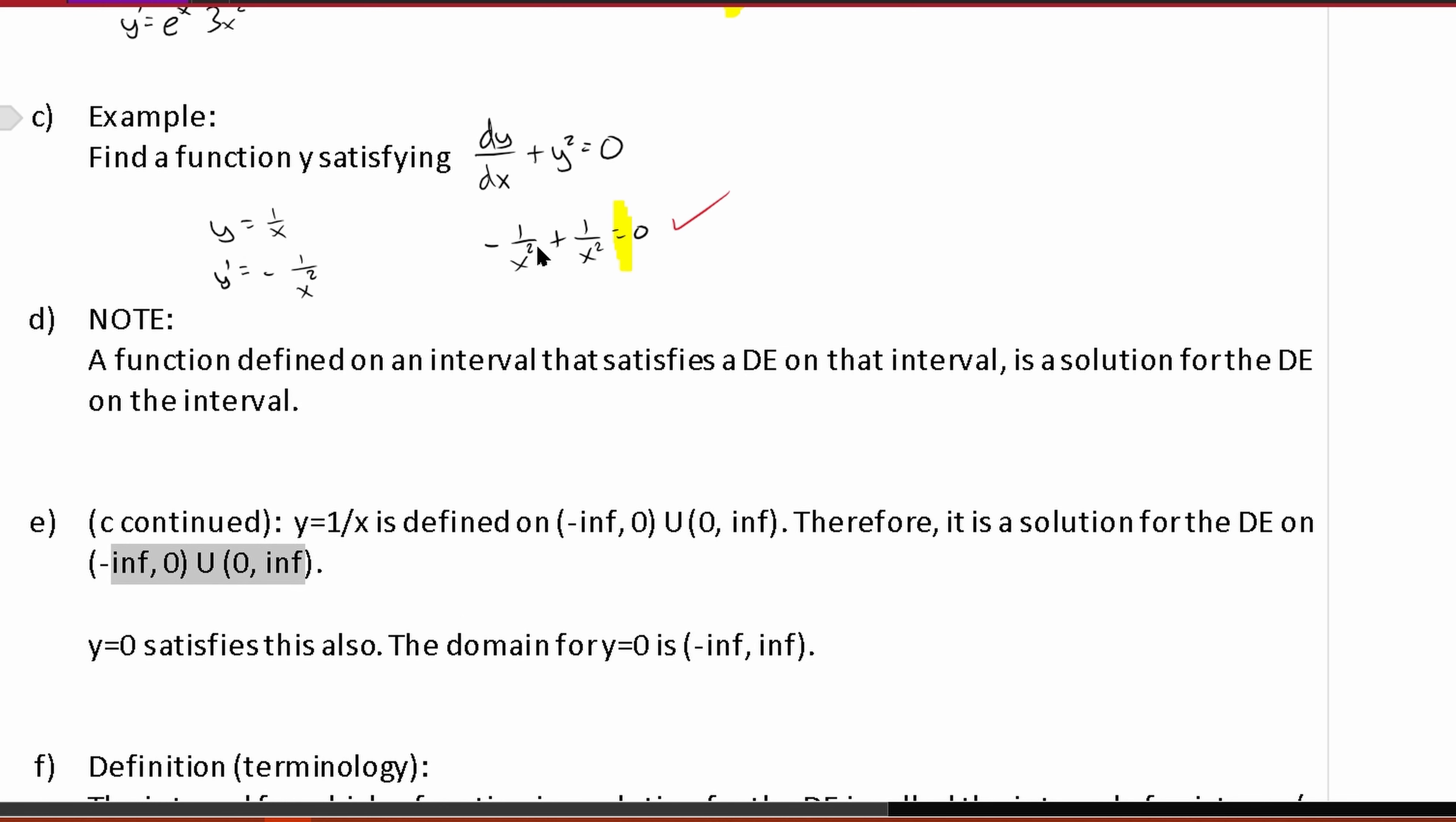Now, what if we plug in something else? Like, let's say y is a constant of 0. That would work too. So the domain, if y is equal to 0, is negative infinity to infinity. So we could say the solution for the DE for y = 0 is (-∞, ∞).